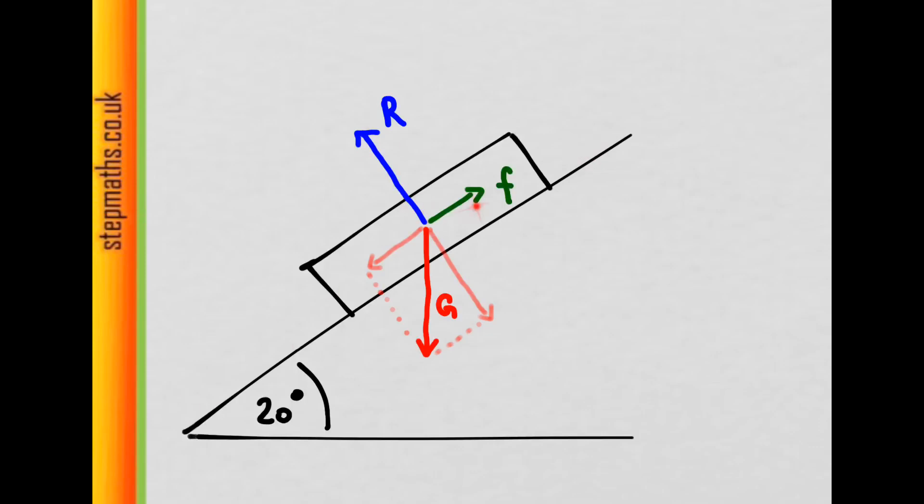And in the direction along the line, we also must have a force. In this case, that's friction. And again, that's the same as this component of the gravitational force.